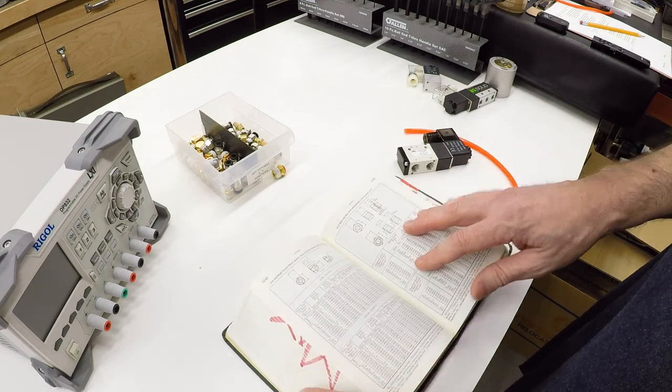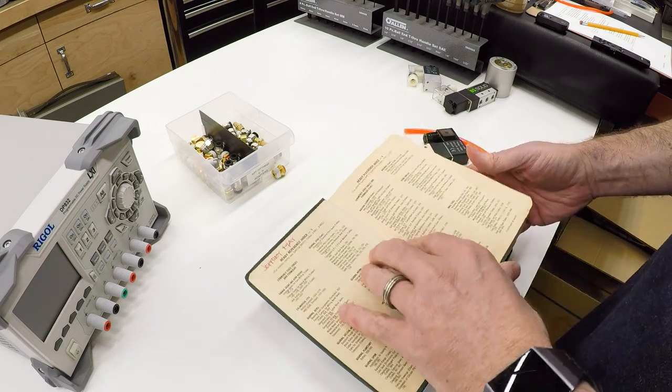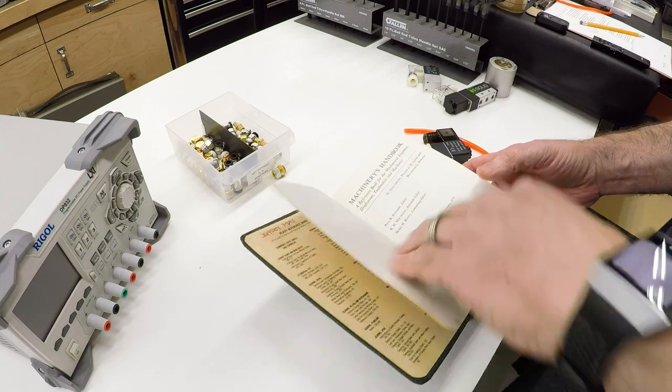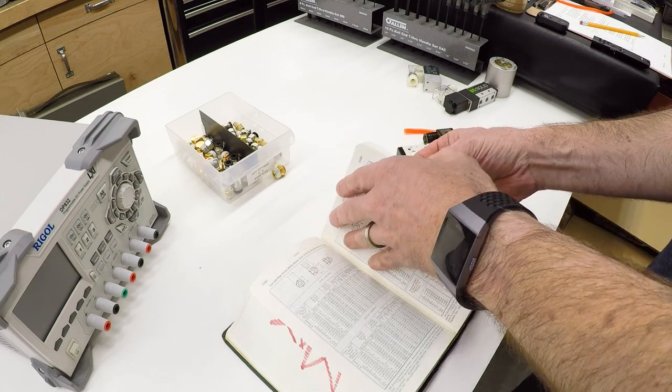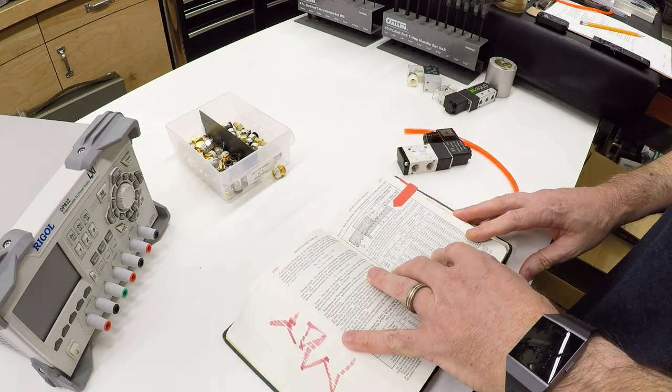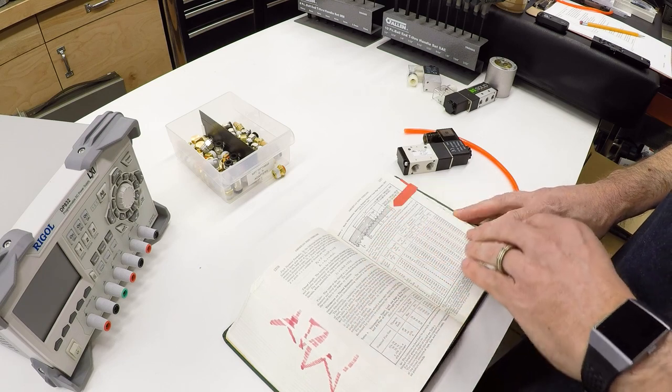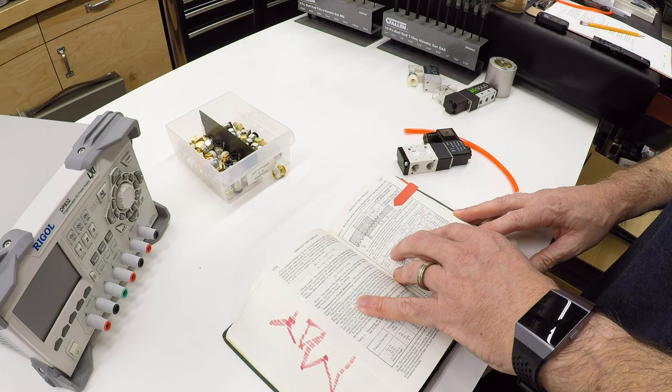So the Machinery's Handbook, this is an old edition. Mine's the 21st, which was 1979. We'll go back here to this section on pipe fittings. There are two main types that are addressed in this book. Those are American Pipe Threads and British Standard Pipe Threads.